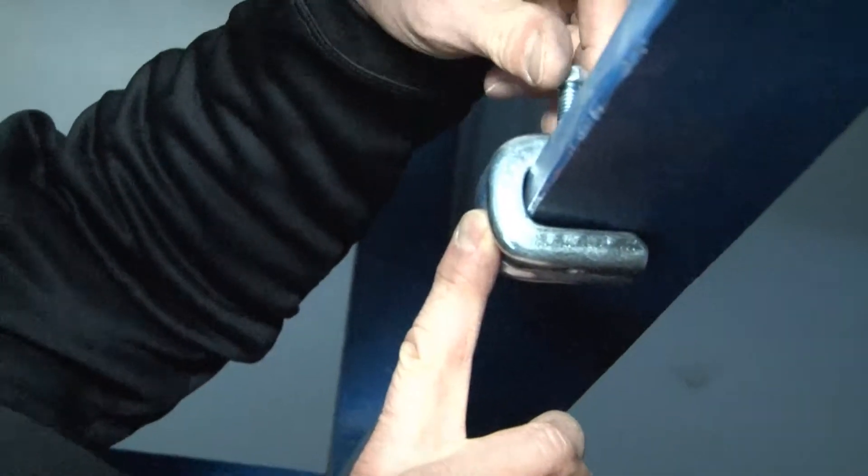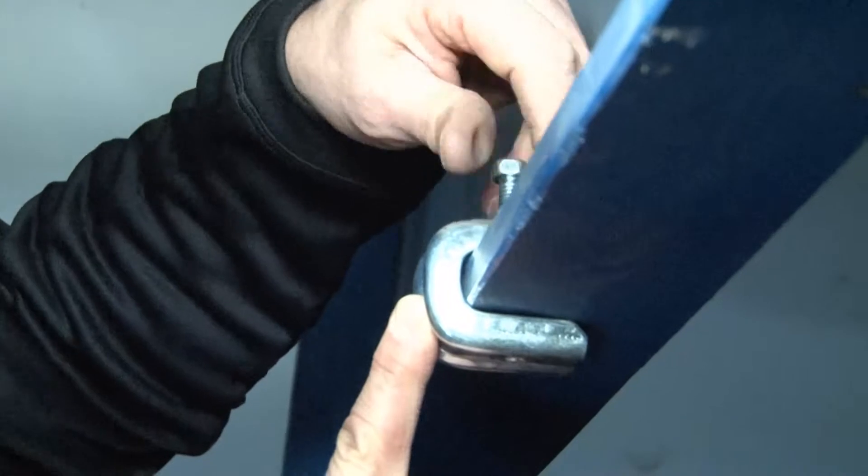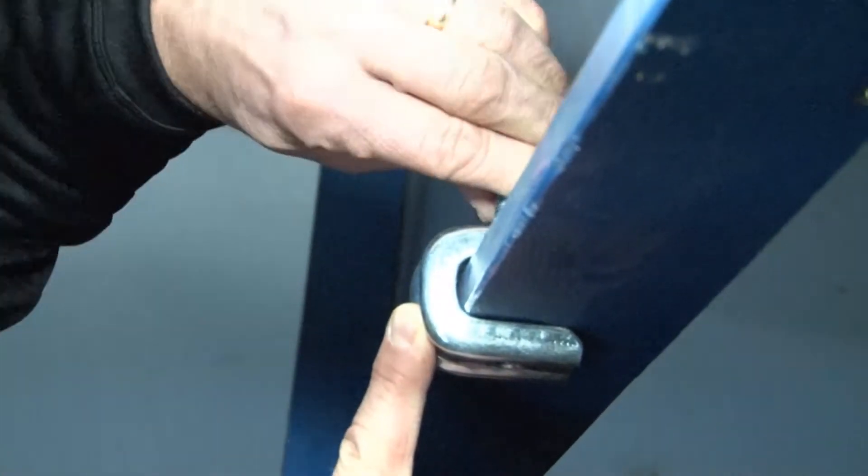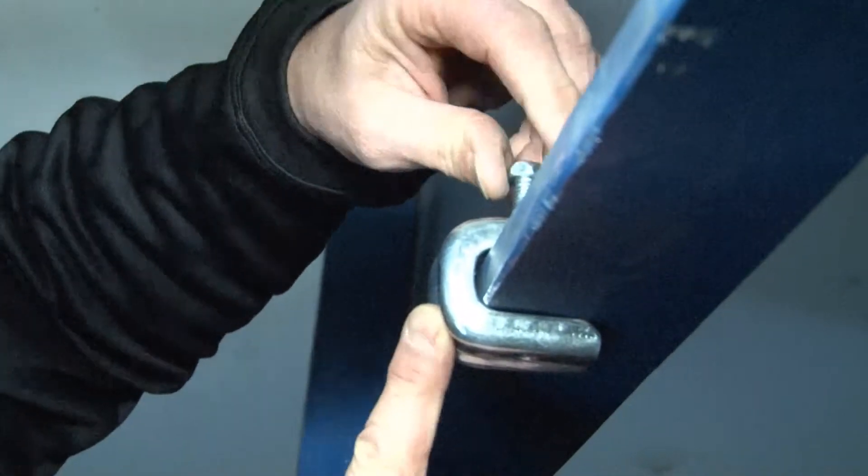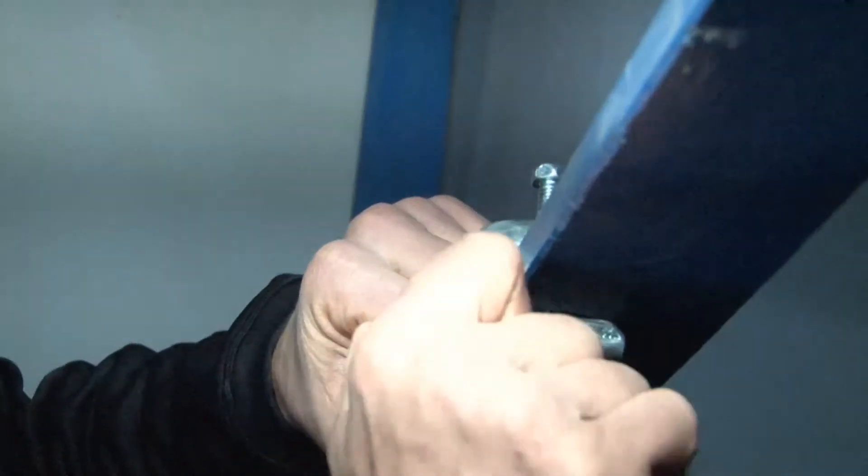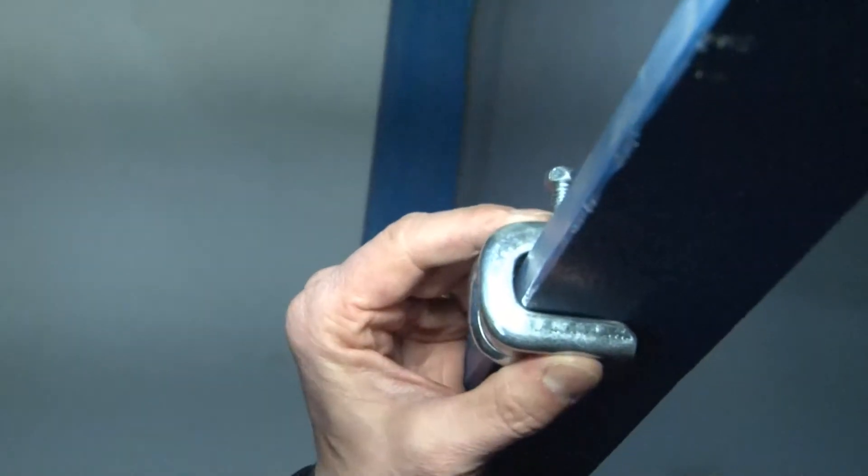Once you have it where you need it, take your pliers and tighten the set screw extra tight so it's secure and rigid on the beam surface.